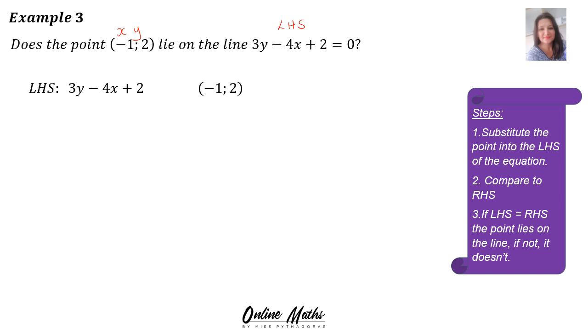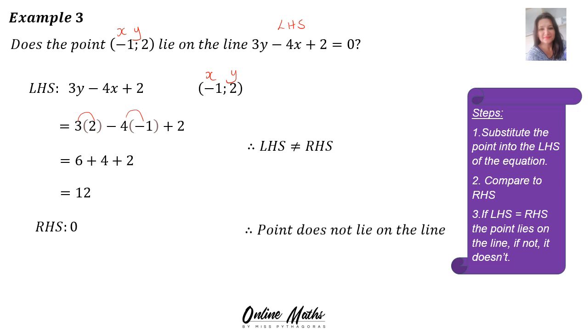In y's place we substitute 2. In x's place we substitute negative 1. Then we can say 3 times 2 is 6, negative 4 times negative 1 is positive 4 plus 2. And when we add everything we get 12. So the left-hand side is 12. The right-hand side is 0. They are not equal. Therefore, the point does not lie on the line.